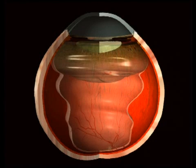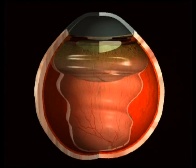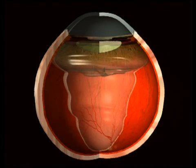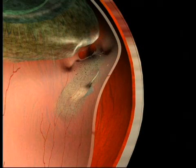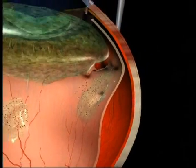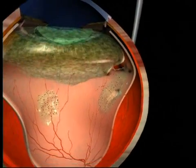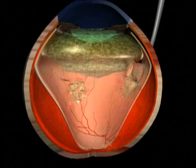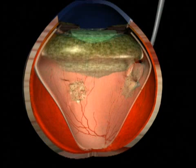Within 8 to 15 days, the retina can become retracted, because pigment cells will start to form membranes over the surface of the retina. And when the retina is retracted, surgery becomes much more complicated and the chances of healing are severely diminished.